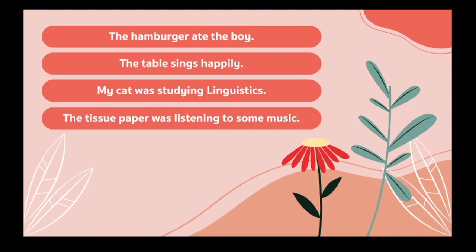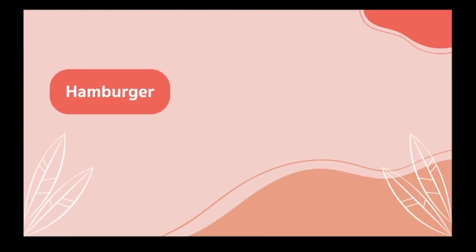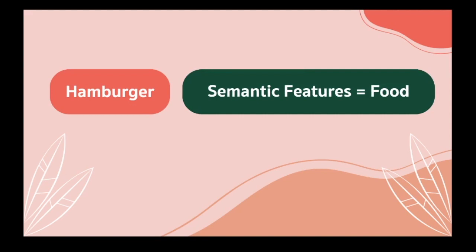Why do these sentences make no sense for us? Maybe because the meanings of the words do not align with each other. From this problem, it leads us to think: what kind of analysis can help us identify the components of conceptual meanings of words? When we talk about the component of conceptual meaning of words, we refer to the basic meaning that the word literally conveys. The way we can analyze this is componential analysis. The word hamburger, for example, can have a semantic feature of 'food,' which is a component of its conceptual meaning.